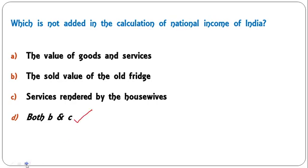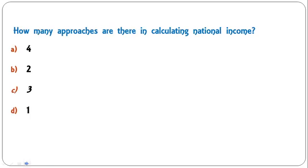Next question: how many approaches or methods are there in calculating national income — four, three, two, or one? The correct answer is three. There are three methods of calculating national income: the output method or value added method, the income method, and the expenditure method.